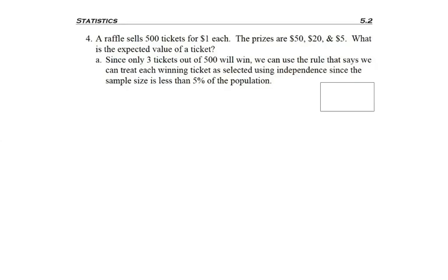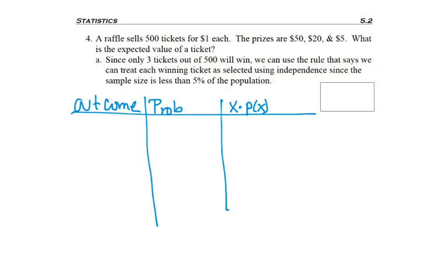Now so far in the discrete tables that we've done, we've been given the table. In this case, no tables are listed, so I need to make my table. Remember, I need to list my outcome, the probability of that outcome, and then for the expected value, I'll need to multiply straight across.